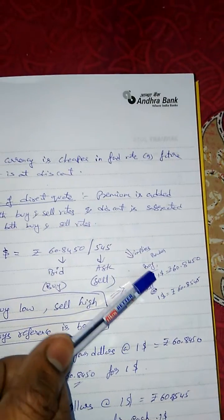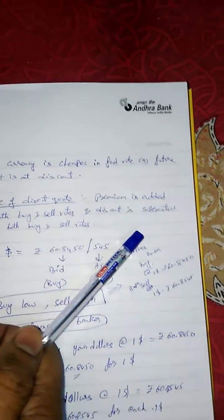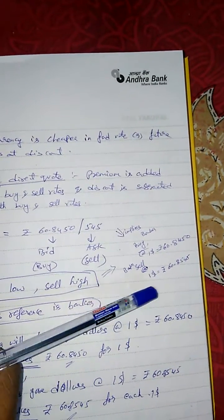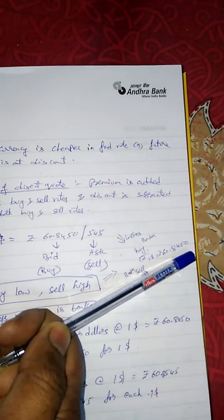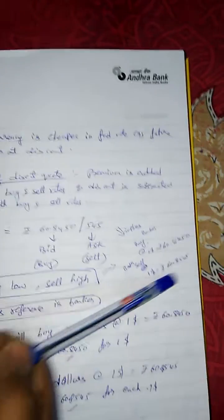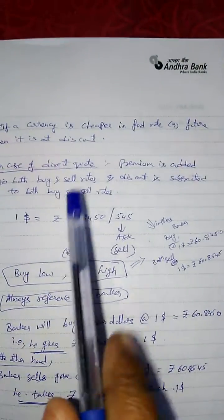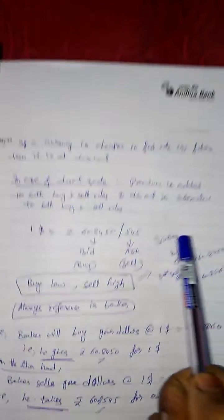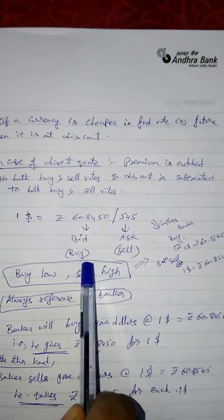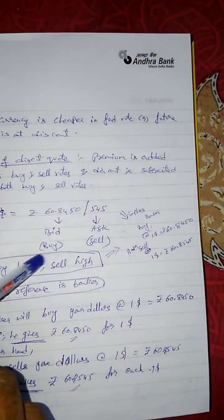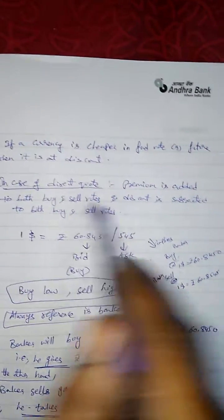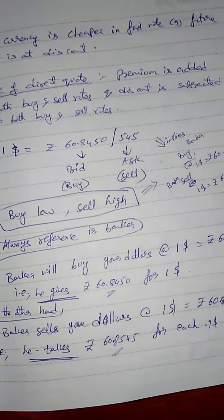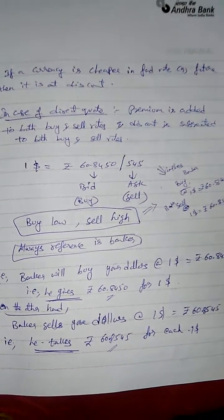Buying one dollar means the banker is accepting your dollars — you have dollars, the banker accepts them and in return gives you rupees. Selling dollar means you are having rupees, banker is buying your rupees and in exchange giving you dollars. While buying, the banker quotes one dollar as 60.8450, whereas in the sell transaction the banker quotes one dollar as 60.8545. Always remember the rule in foreign exchange: buy low, sell high — resulting in profit.